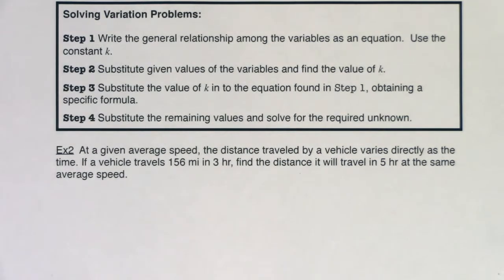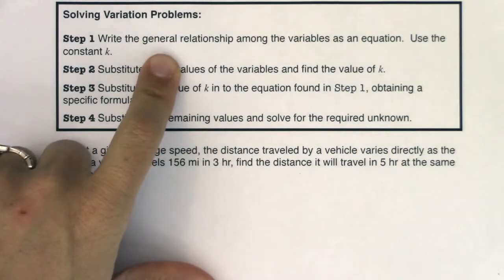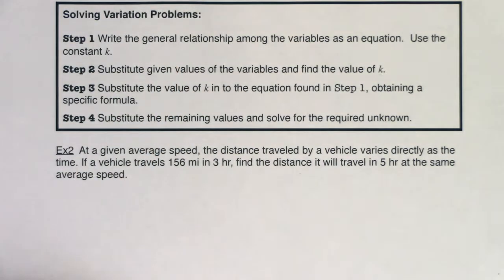So let's go through that in example two and be on the lookout for buzzwords. How do you pick out your buzzwords that help you write your general relationship among these variables as an equation? At a given average speed, the distance traveled by a vehicle varies directly as the time. If a vehicle travels 156 miles in three hours, find the distance it will travel in five hours at the same average speed.